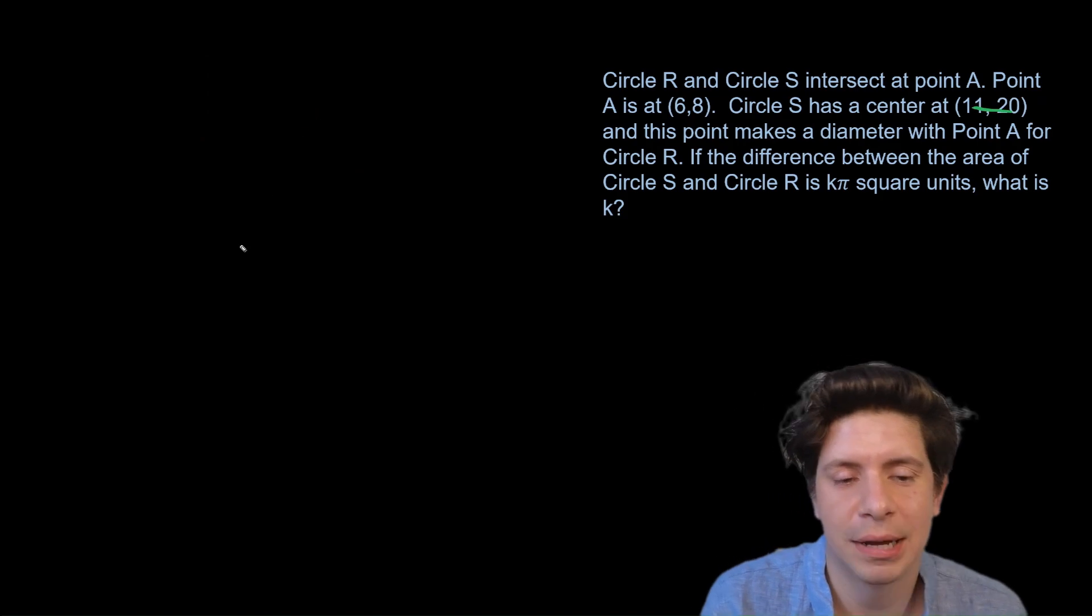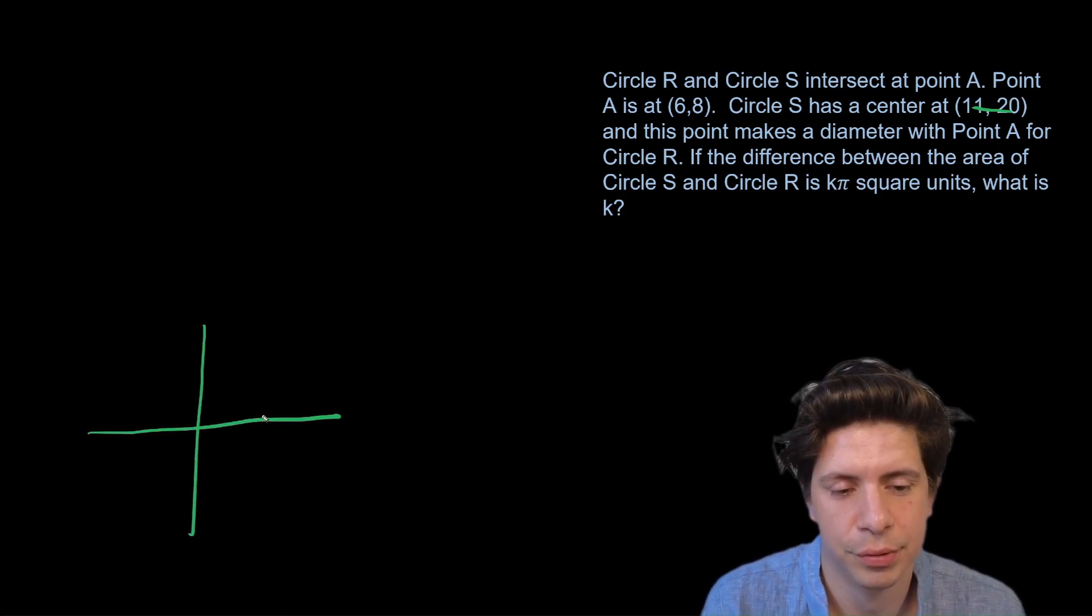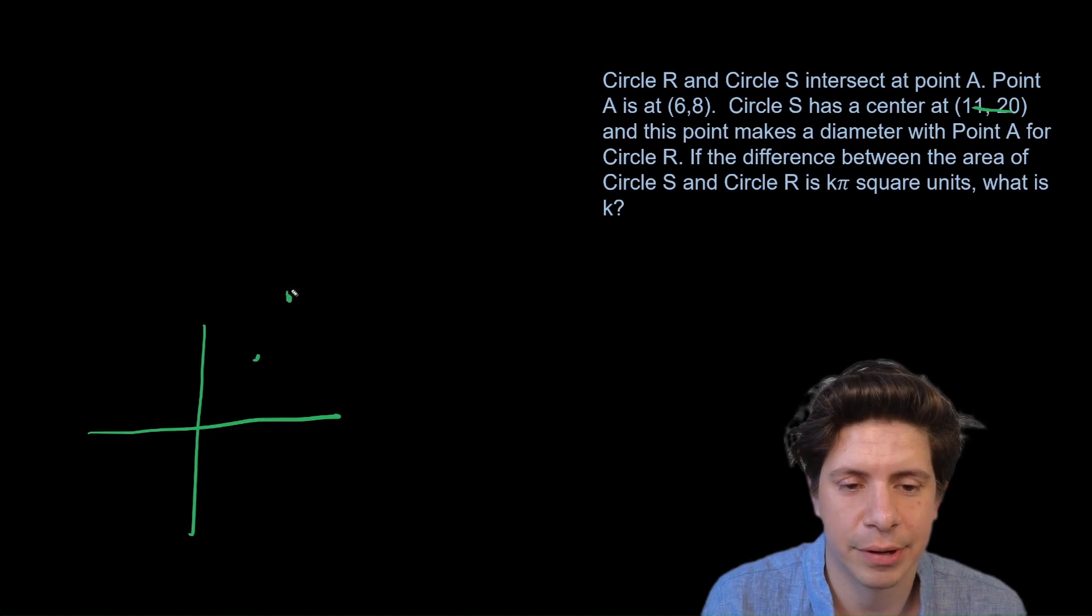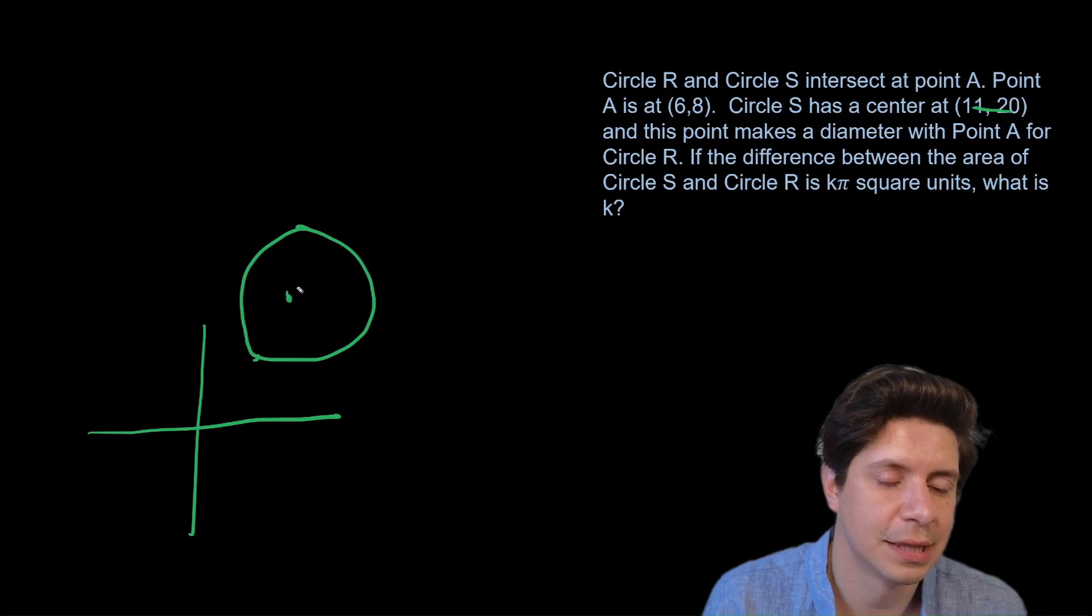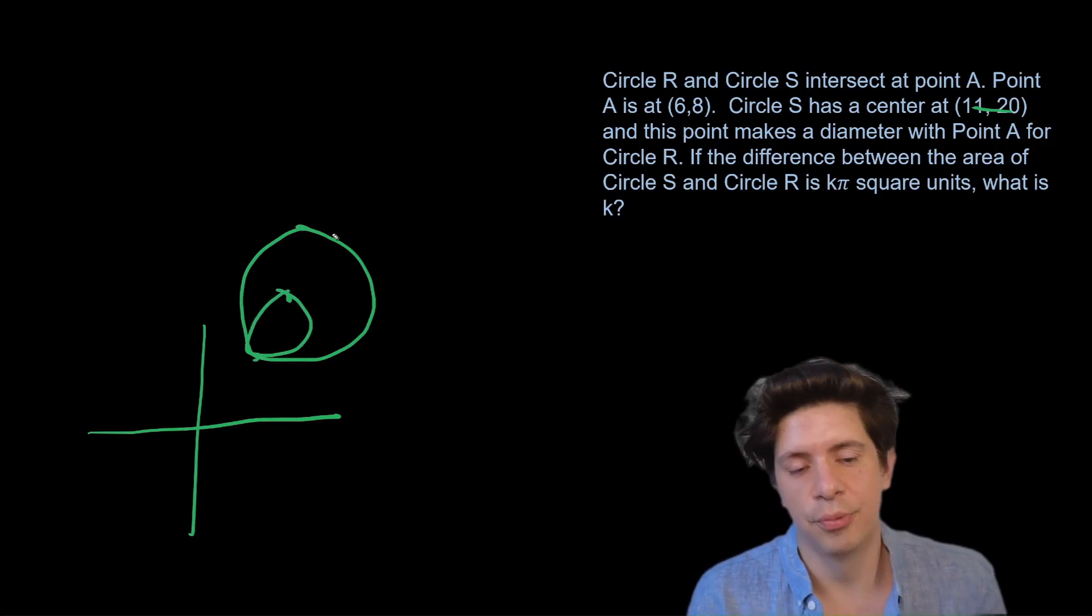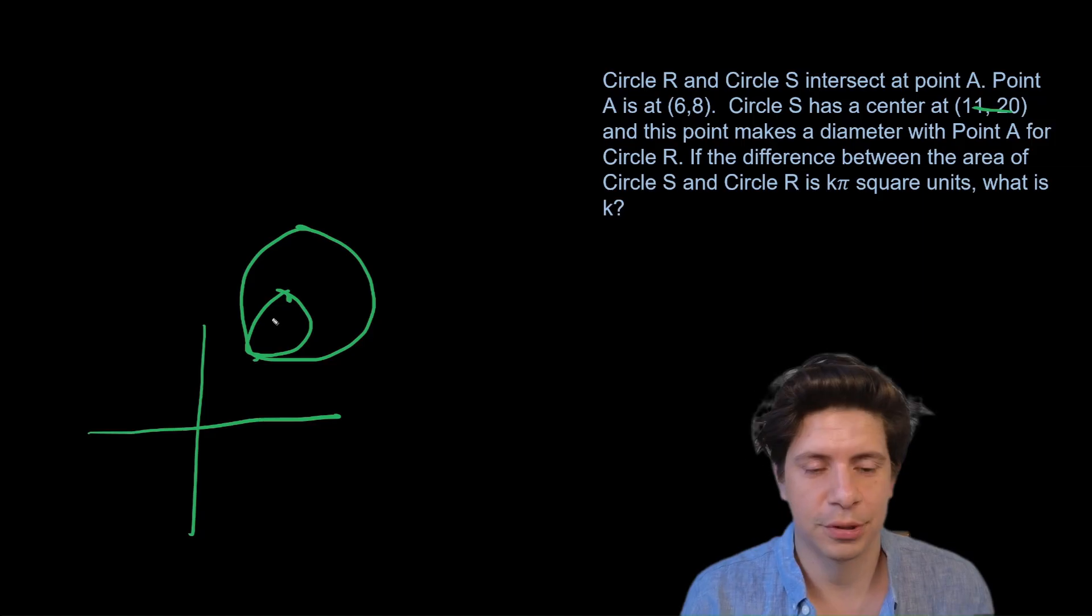So we drew out a version, right? We'd have something like (6,8) up here, and then (11,20) would maybe be around here. This is a terrible drawing but it gives us the idea. So we're going to have one circle that's like that and then another circle that goes like that.